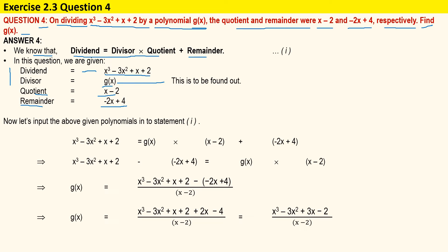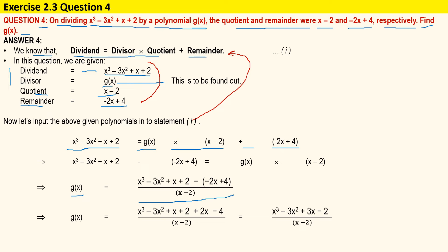Now if we input the values of these polynomials into our statement, we get that x³ - 3x² + x + 2 is equal to g(x) times (x - 2) plus (-2x + 4). Once we simplify, we get g(x) equal to x³ - 3x² + x + 2 minus (-2x + 4), divided by x - 2. On further simplification, g(x) equals x³ - 3x² + 3x - 2, divided by x - 2.